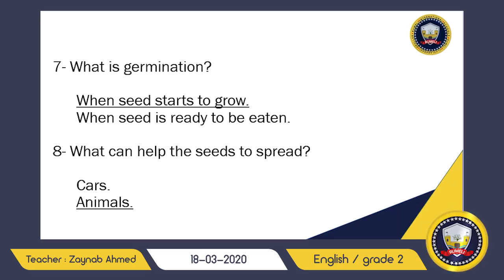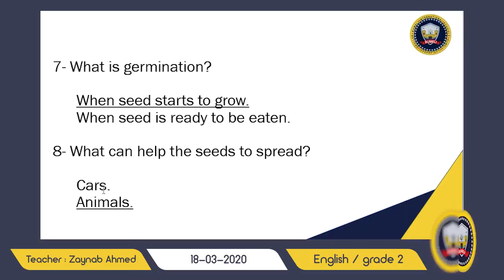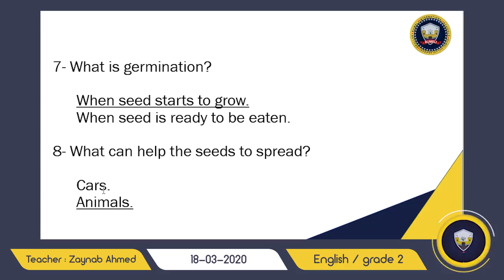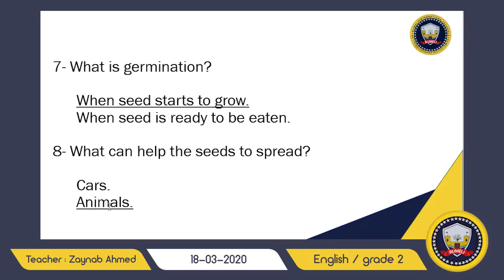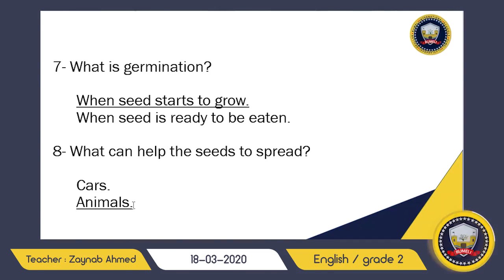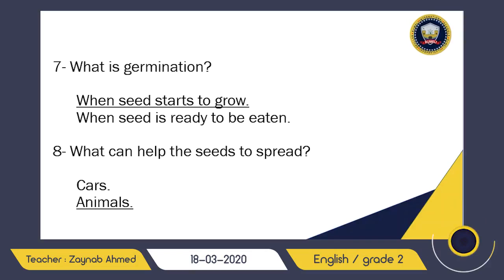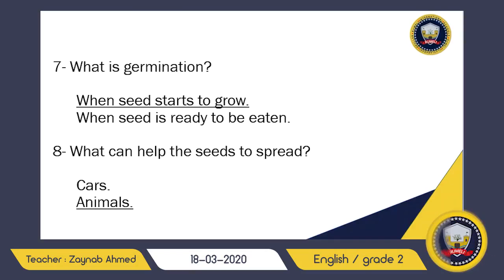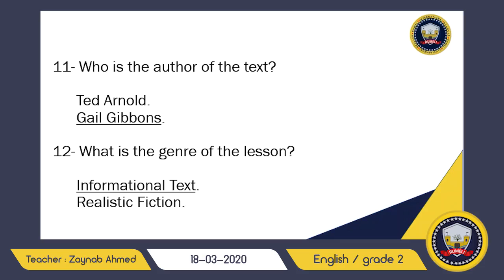Number eight: what can help seeds spread? How do seeds disperse? Not by cars — they won't sit in a car and travel from one place to another. They are carried away by animals, water, or humans. Here we have two options — cars and animals — and the correct answer is animals.